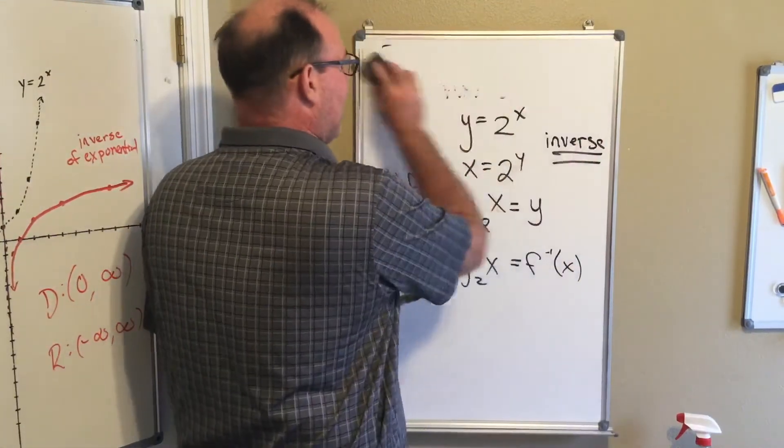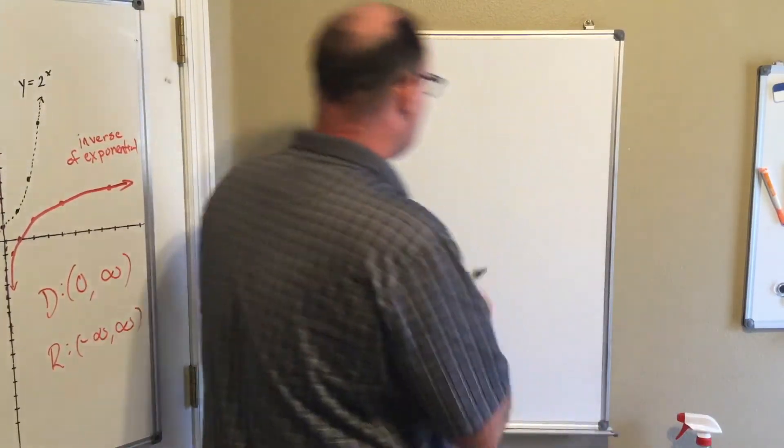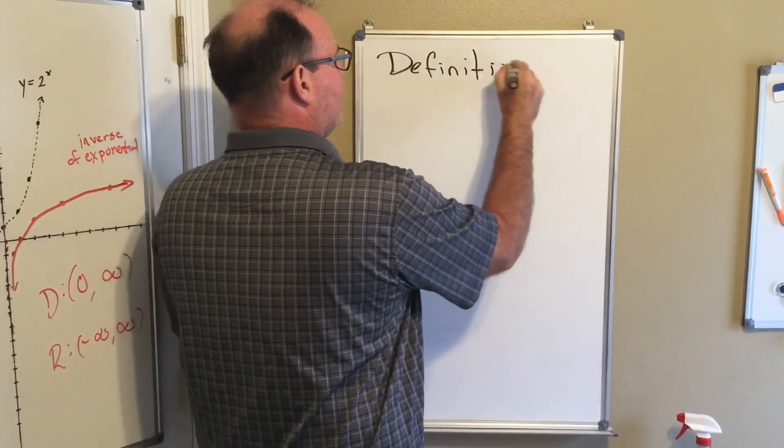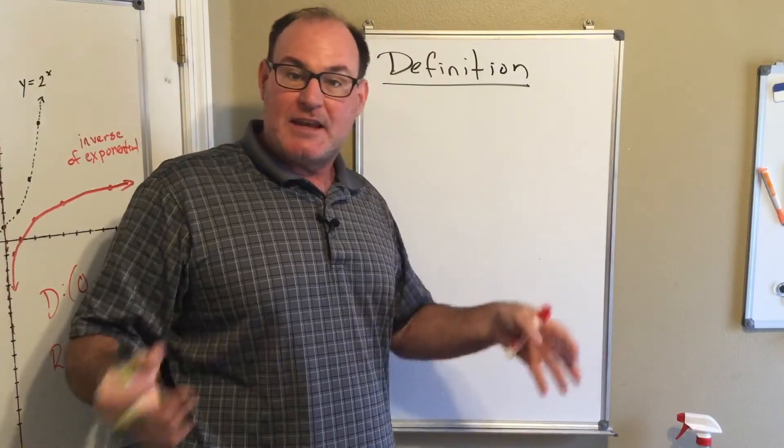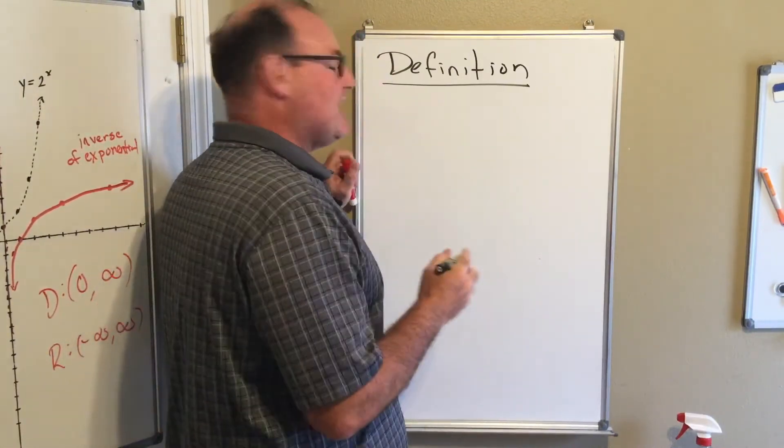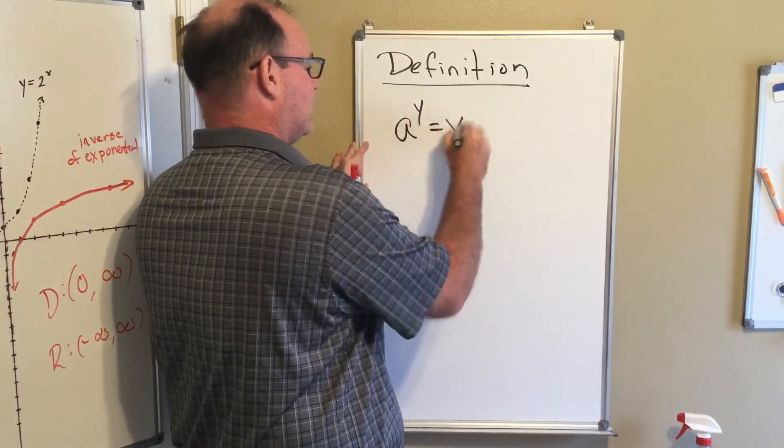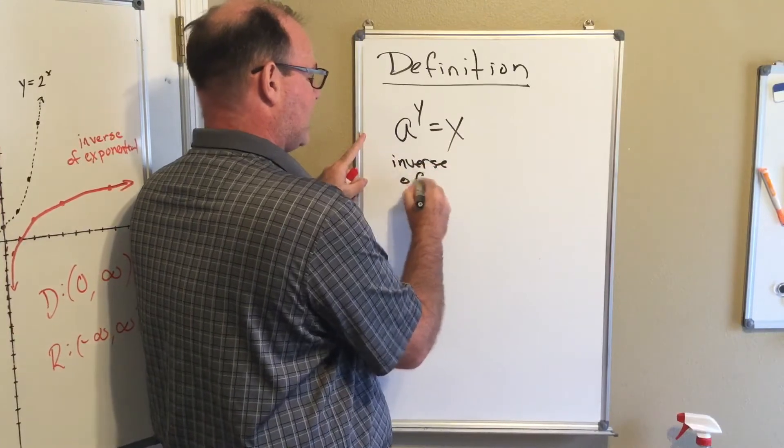We'll get familiar with using this definition in the next few videos. It goes like this: the inverse of our exponential, a to the y power equals x. This is the inverse of the exponential. Notice my x and y are flipped.